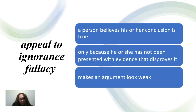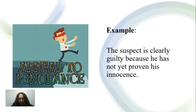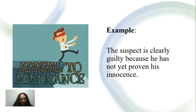The next type of fallacy is the appeal to ignorance fallacy. In this case, the person believes that his or her conclusion is true only because he or she has not been presented with evidence that shows it different. So let's look at this example: the suspect is clearly guilty because he has not yet proven his innocence. But have we tried to look at the evidence that the suspect is presenting? Therefore, that is considered an appeal to ignorance, and that's a fallacy.